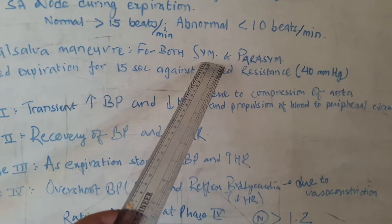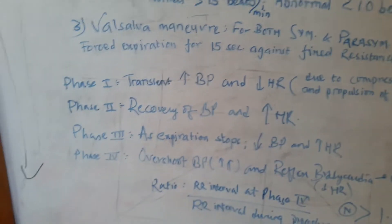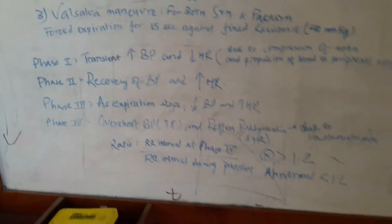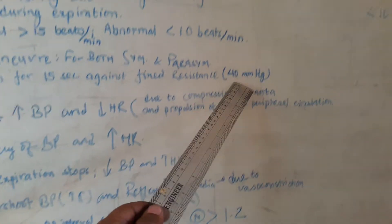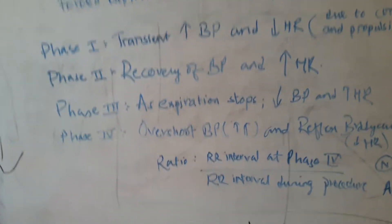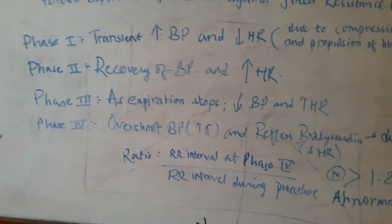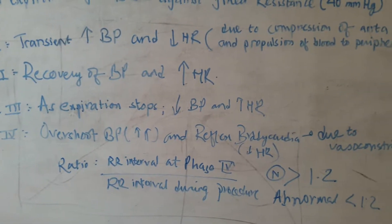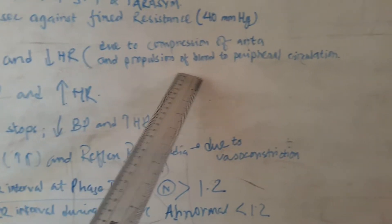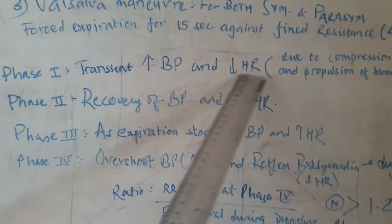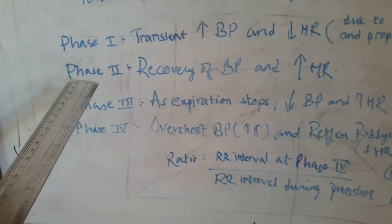The third test is the Valsalva maneuver, which has components of both the sympathetic and parasympathetic nervous system. The patient expires against a fixed resistance of 40 mmHg for 15 seconds. In the first phase there is a transient increase in blood pressure and decrease in heart rate due to compression of the aorta and propulsion of blood into the peripheral circulation. In phase 2 there is recovery of blood pressure and increase in heart rate.